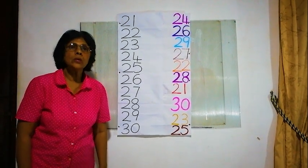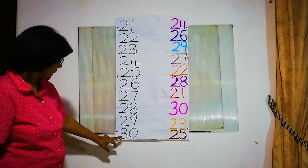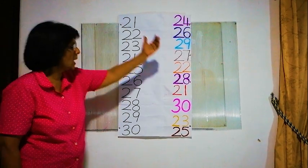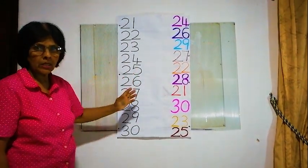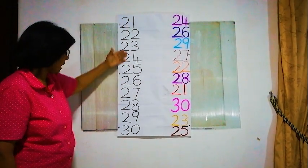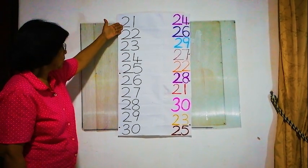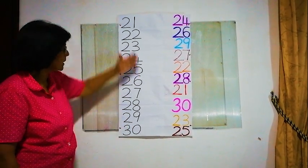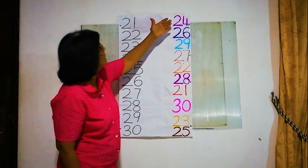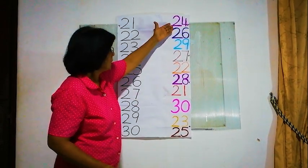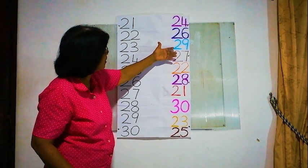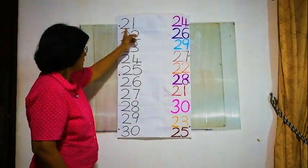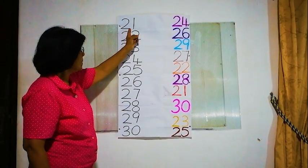Hello children, now I am going to teach you 21 to 30. We have to find the same number on the other side and match them — matching figures to figures. On this side, all the numbers are in order: 21, 22, 23, 24, 25, 26, 27, 28, 29, 30. On the other side, all the numbers are mixed up — not in order. We have to find the correct number and match.